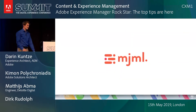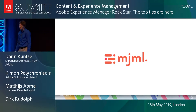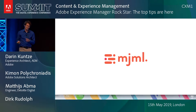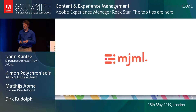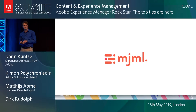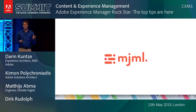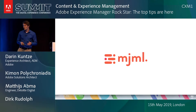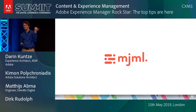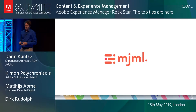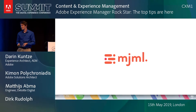Luckily it's not only us facing those issues, and especially Mailchimp put some effort into standardizing the way you can template emails. They started a project internally called MJML, the Mailchimp Markup Language, as the backend for their what-you-see-is-what-you-get editor. Basically MJML is an XML dialect that puts an abstraction layer on top of HTML and CSS particular to emails.